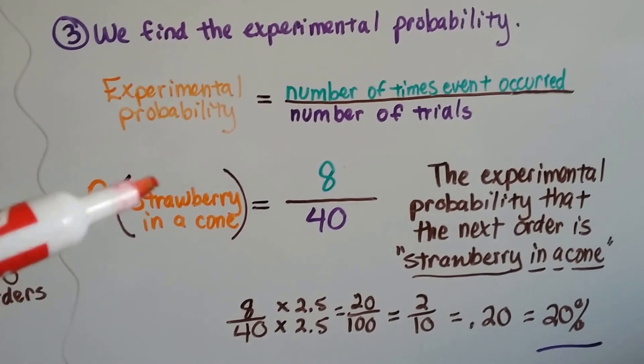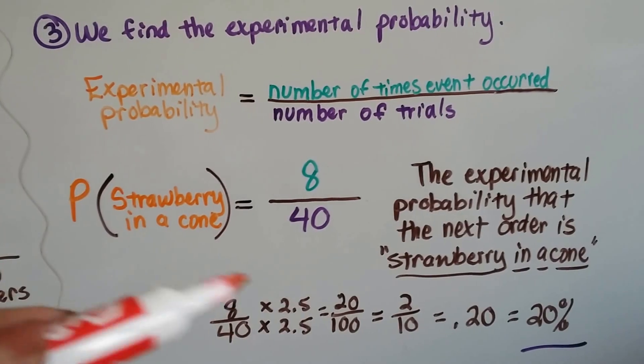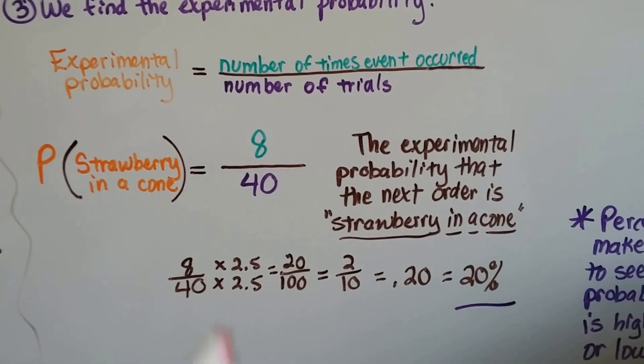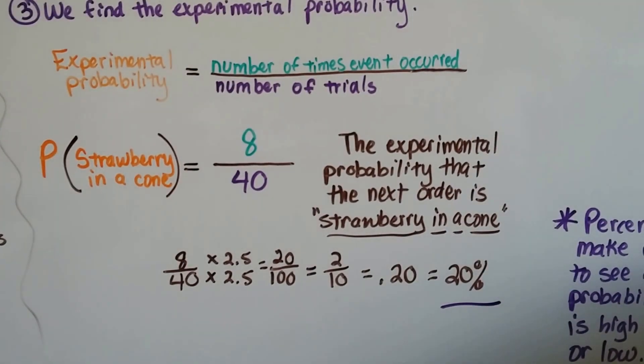So, the probability of strawberry in a cone is 8 over 40. That is the probability that the next order is going to be strawberry in a cone.